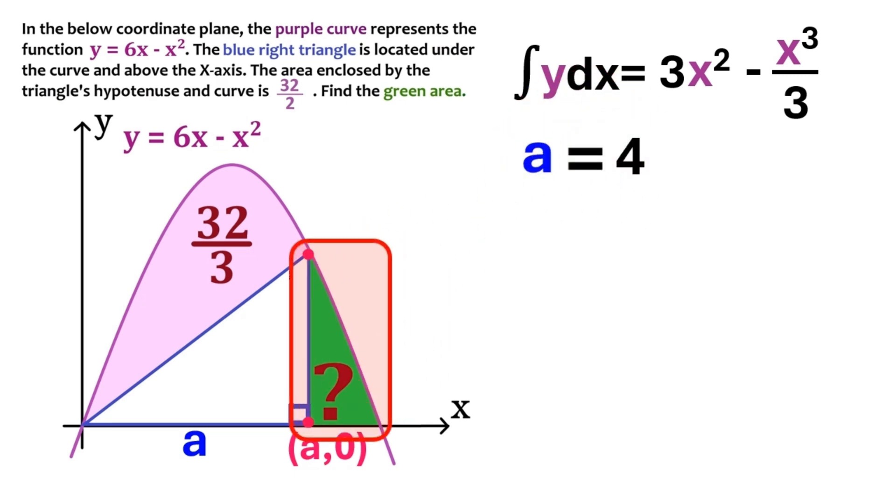Now we can start working on the green area using the integral. To do that, we need to ascertain its start and end values on the x-axis. And we know the start value is 4. Because we've just found a equals 4. And for now, we'll call the end value z.